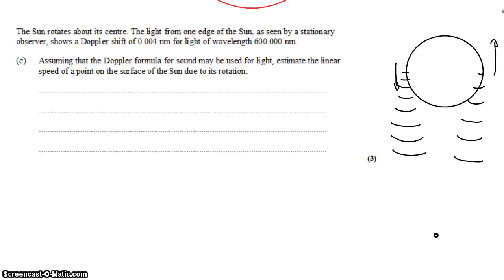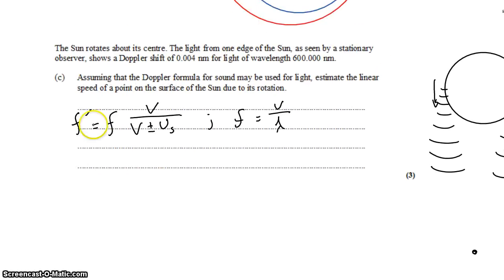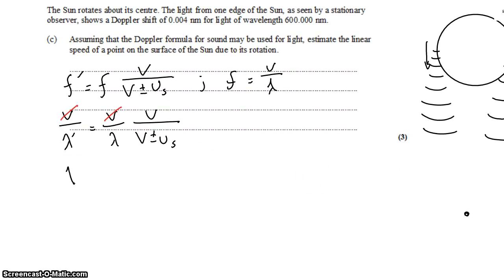So we want to try and use the Doppler formula for sound. For a moving source, it tells us that the observed frequency equals the original frequency times the speed of the wave divided by the speed of the wave plus or minus the speed of the source. That's wavelength, but we know frequencies. So let's use the relationship that frequency equals wave speed divided by wavelength to convert this to wavelengths. We can say wave speed divided by the observed wavelength equals wave speed divided by the original wavelength times the wave speed over the wave speed plus or minus the source speed. We can divide both sides by the speed of the wave and flip both sides of the equation just to make it a little neater.